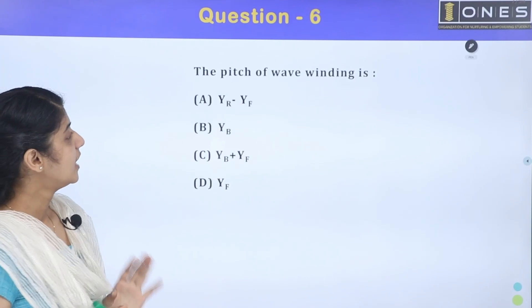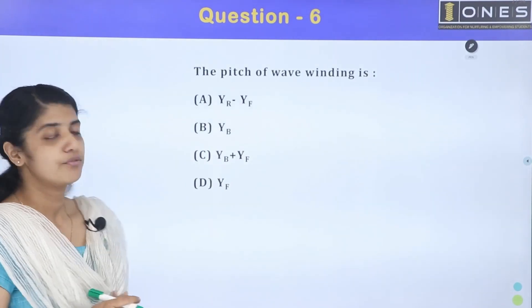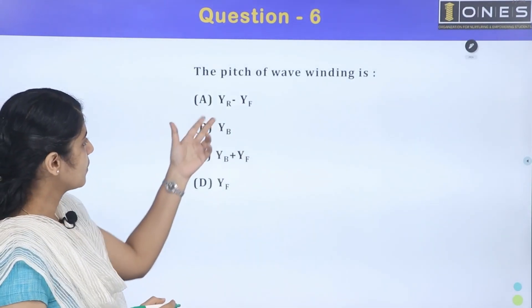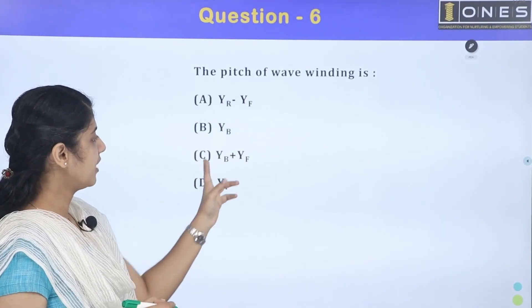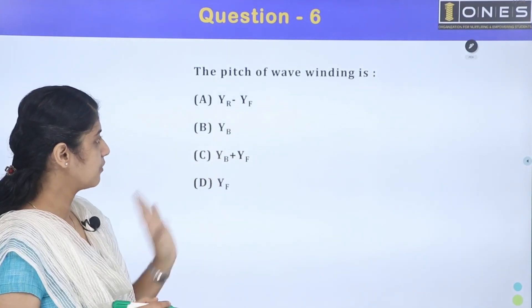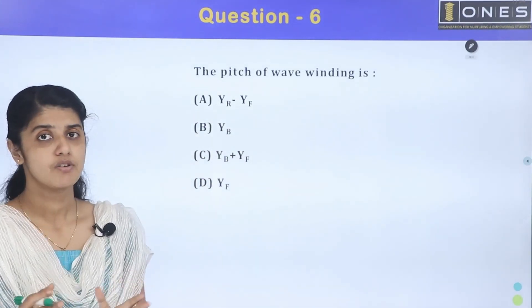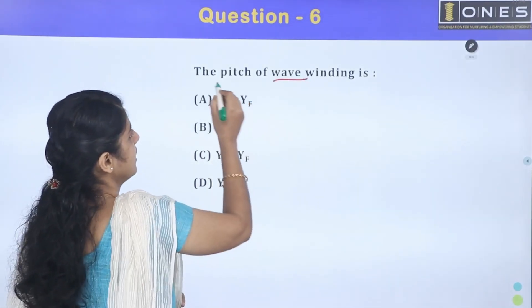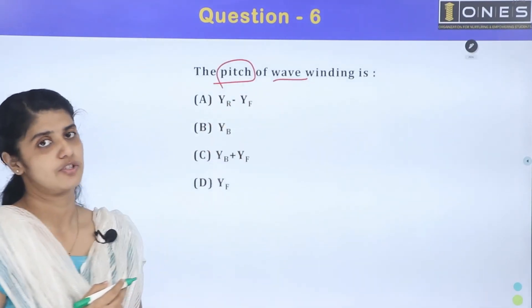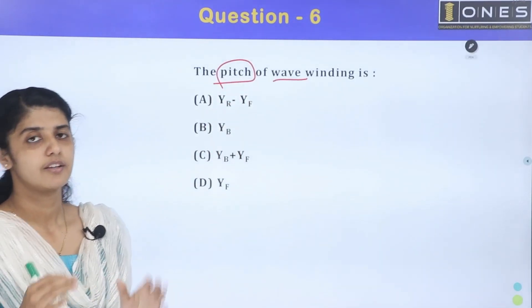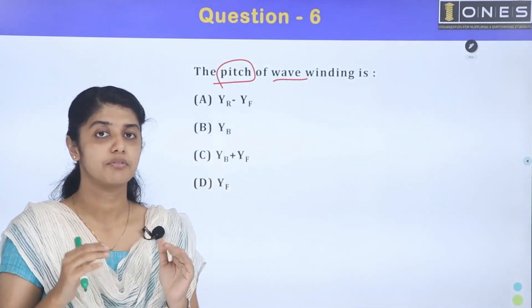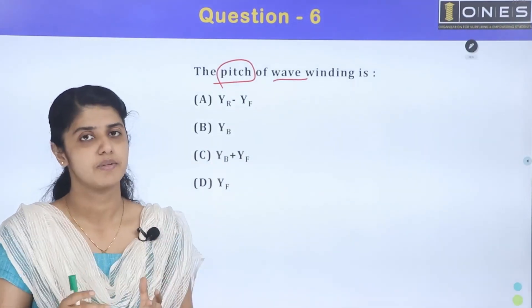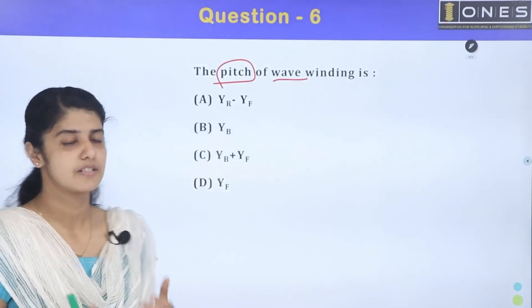Next question: the pitch of a wave winding is? Options are yb minus yf, yb plus yf, yf. The pitch of a wave winding — we are going to look at different types of pitch: front pitch, back pitch, commutator pitch, and resultant pitch.